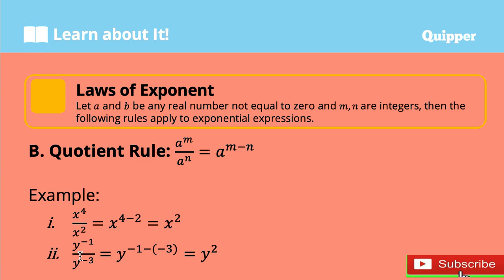Another example: y to the power of negative 1 divided by y to the power of negative 3. Just copy the base, which is y, then subtract the exponent: negative 1 minus negative 3. A negative times a negative is positive, so you have negative 1 plus 3, giving y to the power of 2, or y squared.